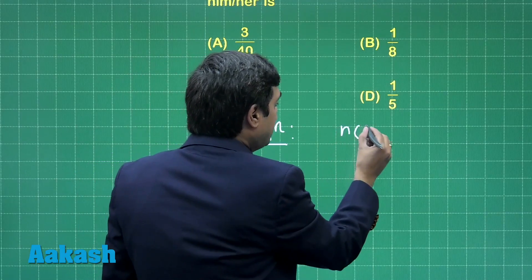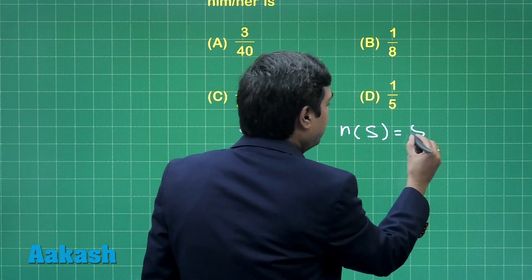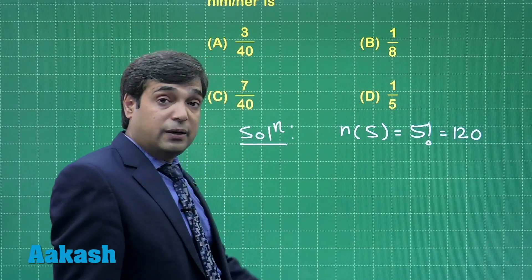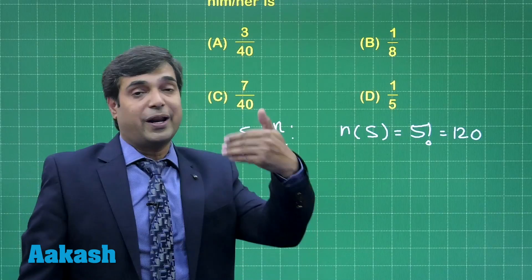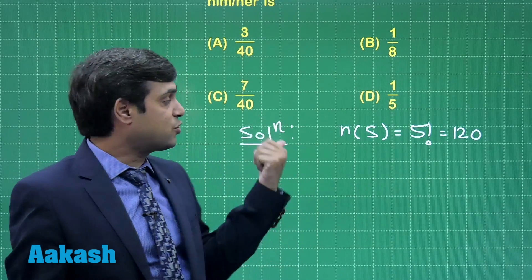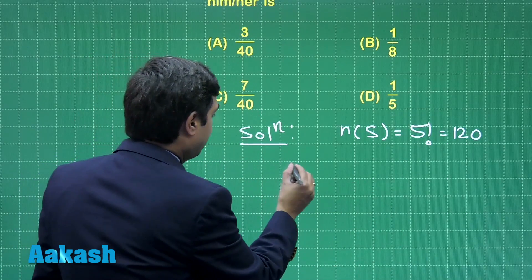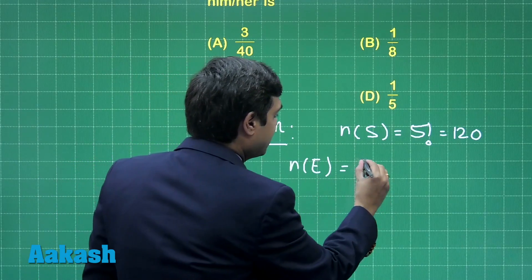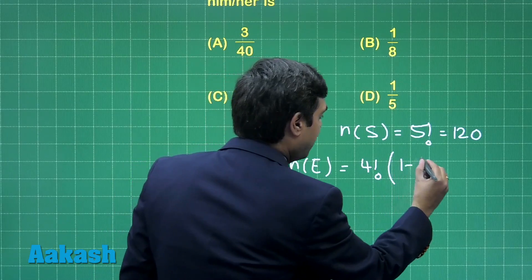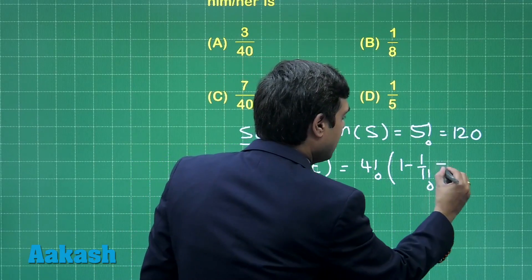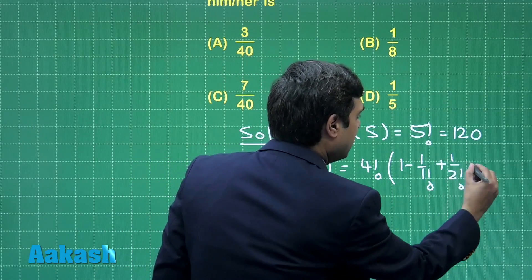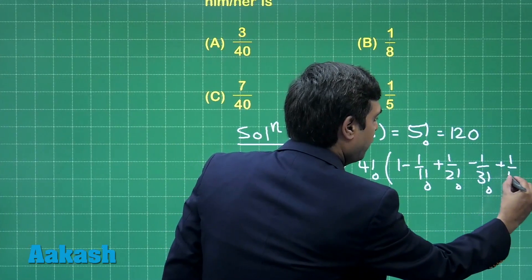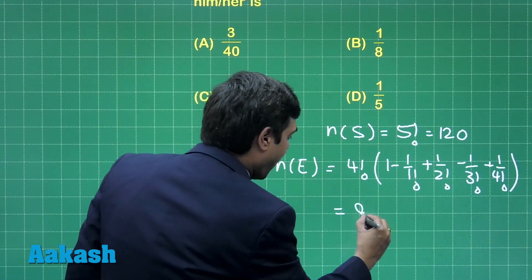Total, that is sample space, we simply get factorial 5 or it is 120. R1 for S1, rest 4 has to be deranged, meaning the number of elements favoring the event is simply 4 factorial multiplied with 1 minus 1 upon 1 factorial plus 1 upon 2 factorial, which gives you simply 9.